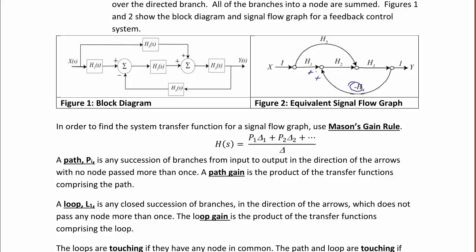For Figure 2, an example of a path would be H1, H2, H3. Another example of a path would be H5, H3. Both of those give direct paths from the input to the output.